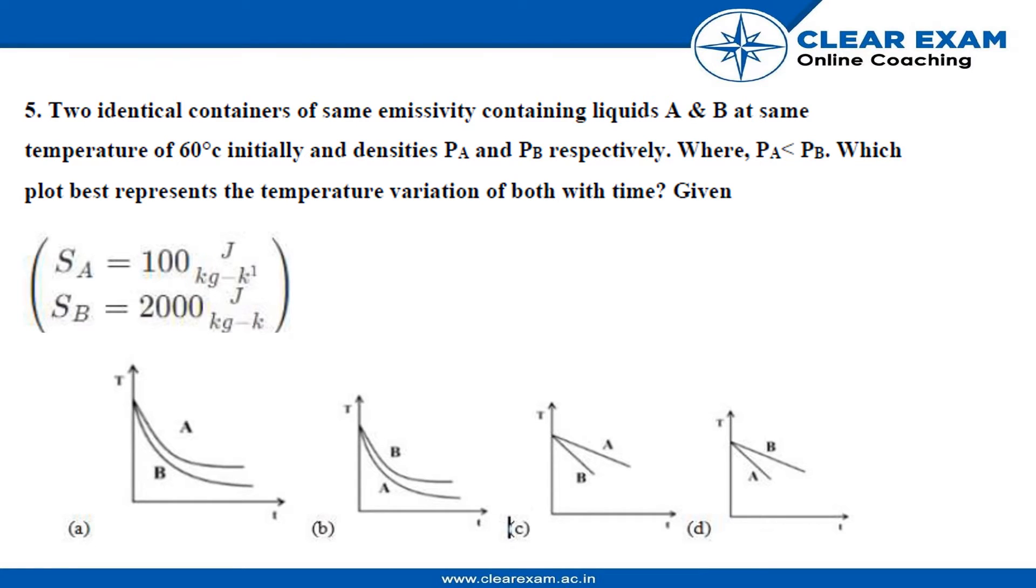Question 5: Two identical containers of same emissivity containing liquids A and B at same temperature of 60 degree Celsius initially and densities Pa and Pb respectively, where Pa is less than Pb. Which plot best represents the temperature variation of both with time? Given SA is 100 Joules per kg Kelvin and SB is 2000 Joules per kg Kelvin.